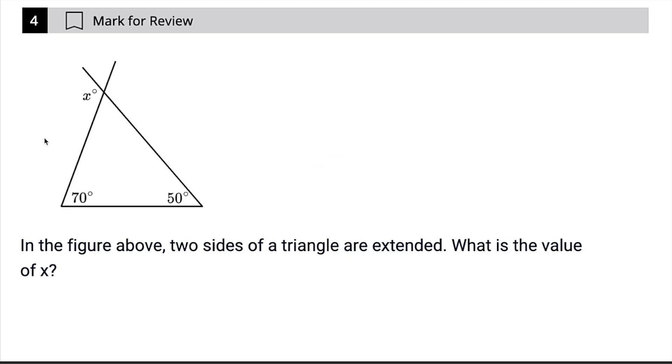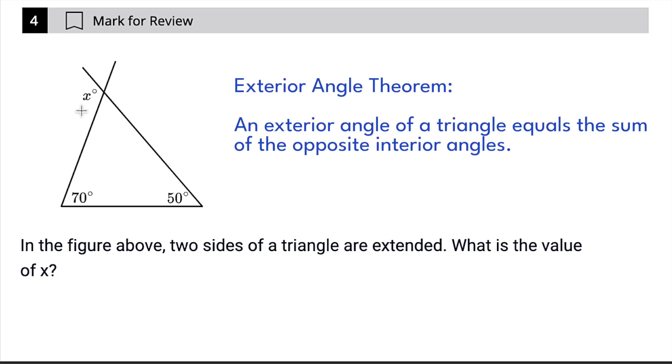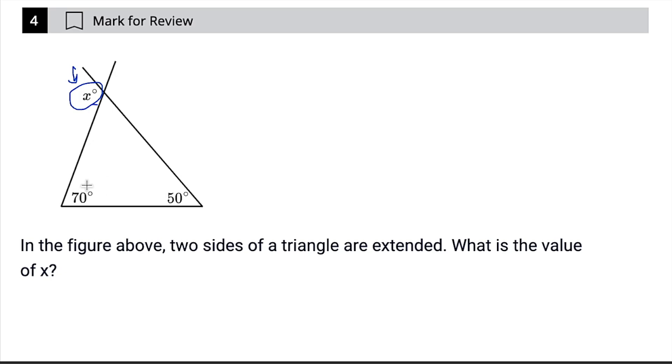And what you need to know to make this one super easy is the exterior angle theorem, which states that any exterior angle of a triangle such as x, that is an angle that's outside of the triangle kind of popping out of the triangle, is going to be equal to the opposite interior angles. So 70 plus 50 is 120. So our answer is 120.